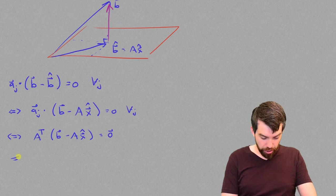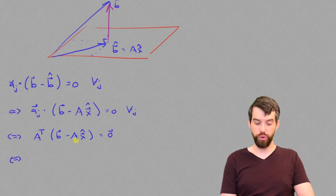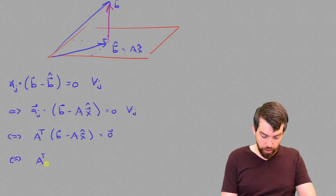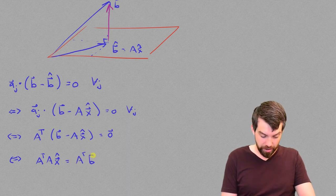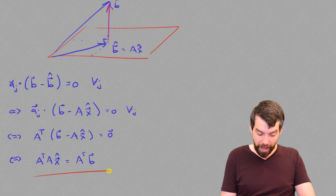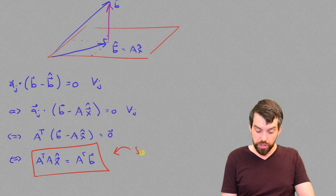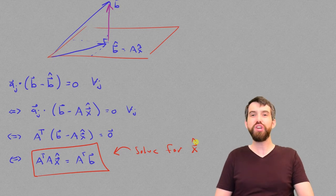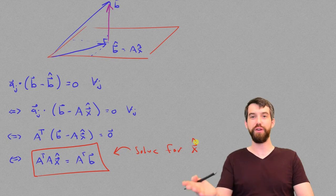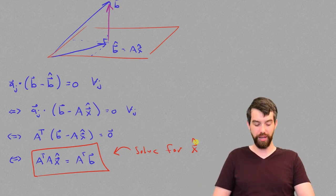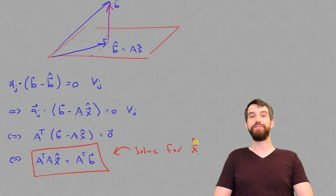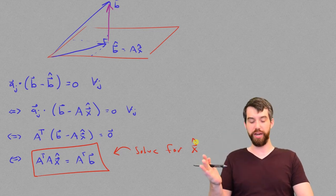I'm going to distribute the A^T through, and I'll move the A^T b to the other side, and what I get is that A^T times A times x̂ is just going to be the same thing as A^T times the vector b. And this is my final formula here. It's a system, and I can solve this system for the vector x̂. So I don't have to go through the rigmarole of figuring out b̂ first, which we had previously seen with some projection formula. I can just multiply on the left by A^T and then solve that system. We know how to solve systems, and that's going to give me my x̂, my least squares approximation to Ax = b.